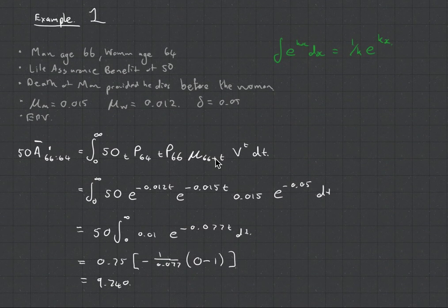So example one, we've got a man aged 66 and a woman aged 64 and they're going to get a benefit of 50 on the death of the man provided that the woman is still alive. And they give you some forces of mortality. So as you can see, the 50 here relates to our benefit. This value here shows that the woman must survive. This shows here that the man must survive and then die. And then that's our discount factor. We then substitute the forces in and we can get the answer. It's very easy.